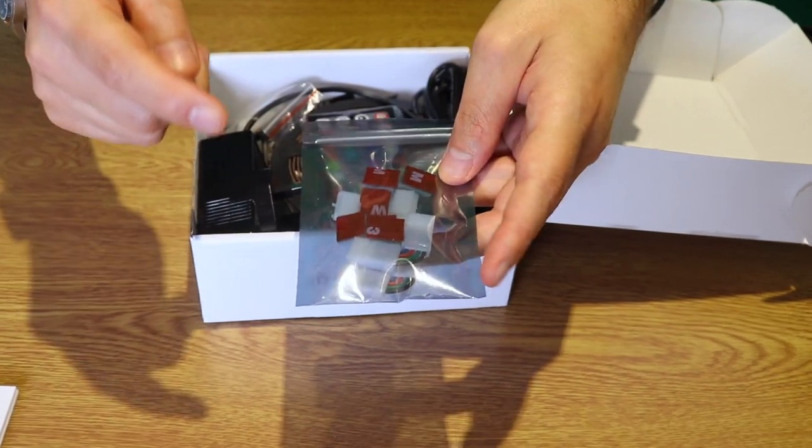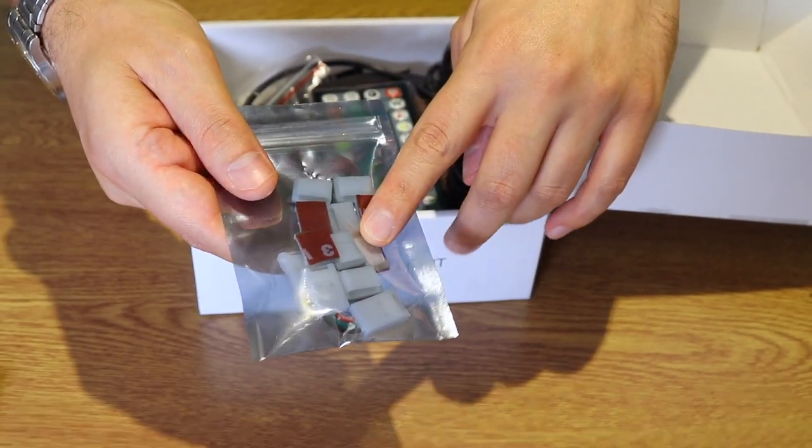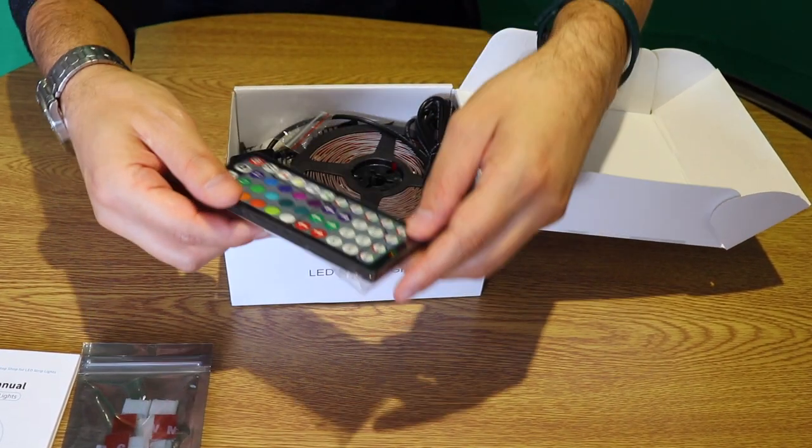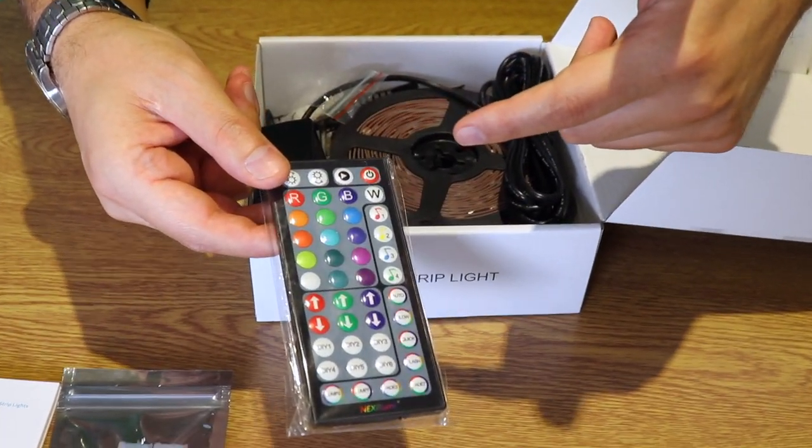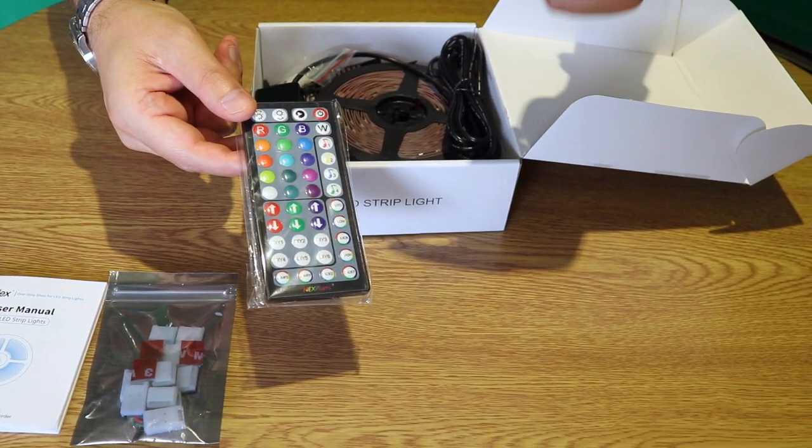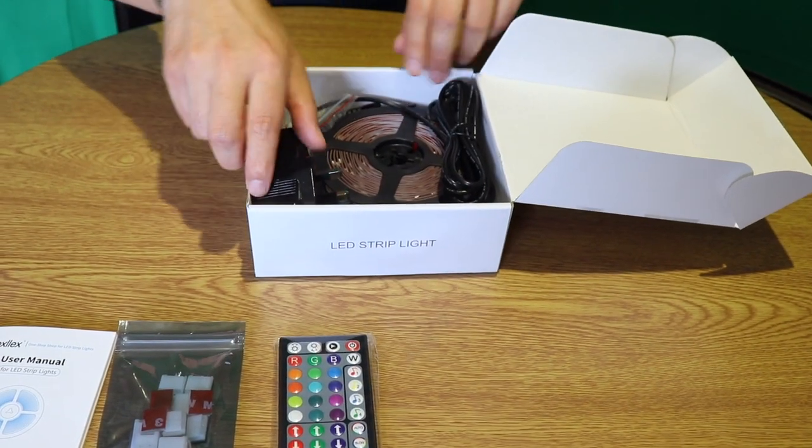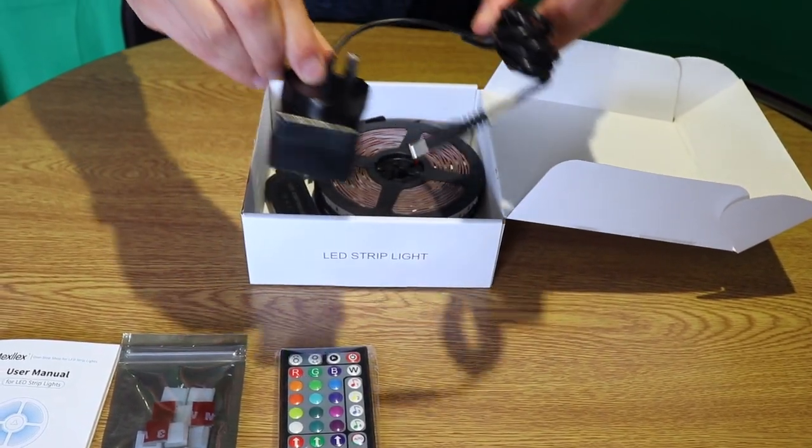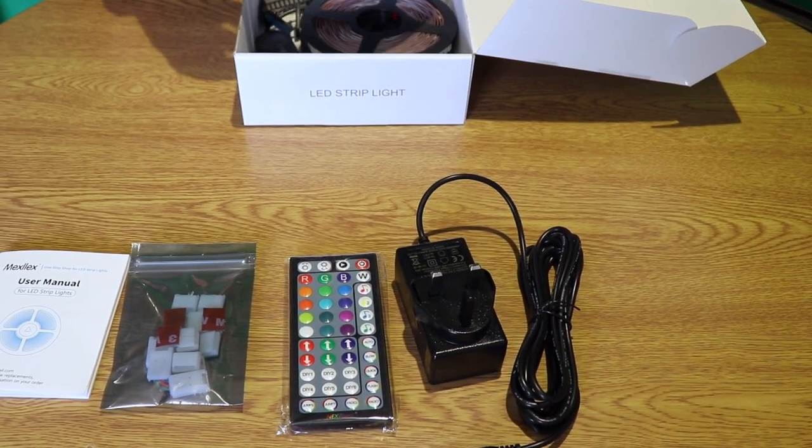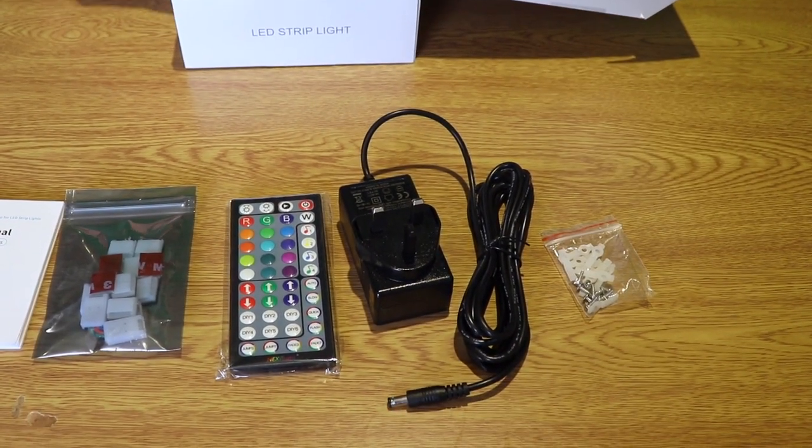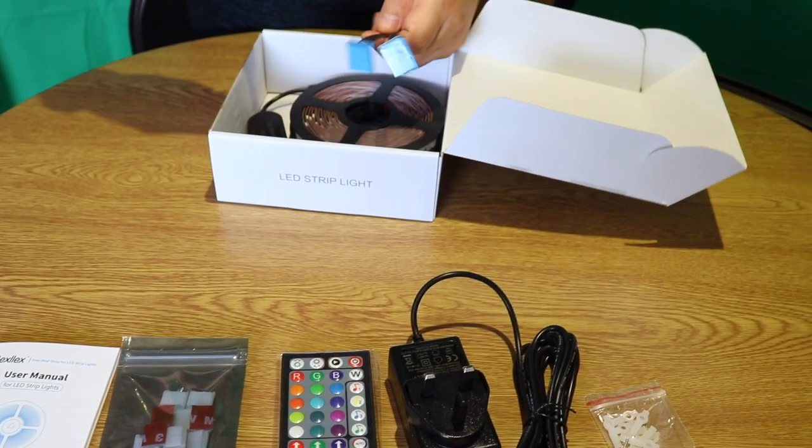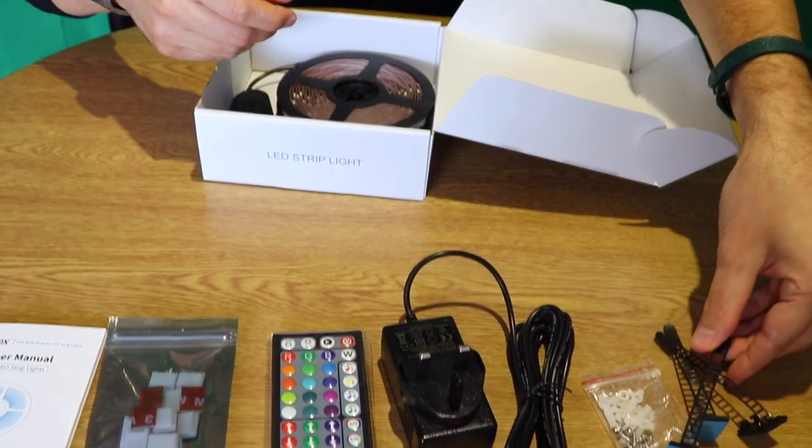So we have the L-shape connectors, which is a very good touch to have. Also we have the remote control. You can control the lights via remote control. Also digital app that I'll cover in the video as well. This is the AC power adapter, which is a good size, I think. We have some screws, installation mounts, which is a very good touch. Some more installation mounts, always is a good plus.